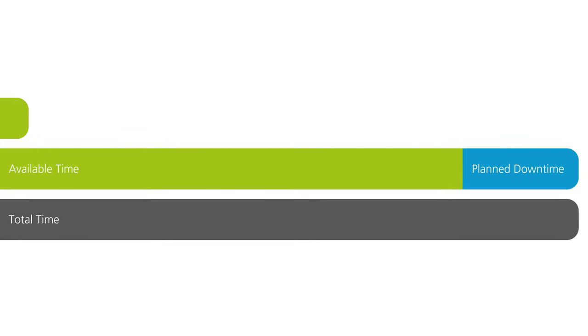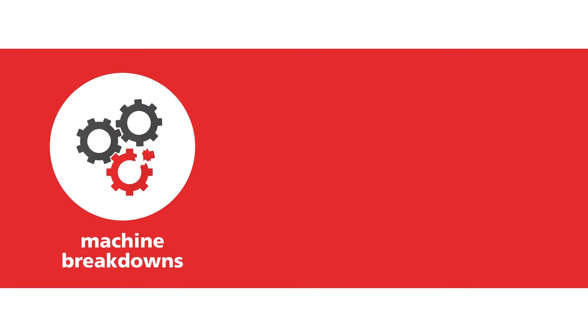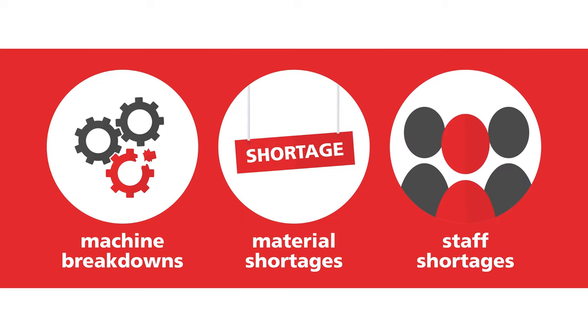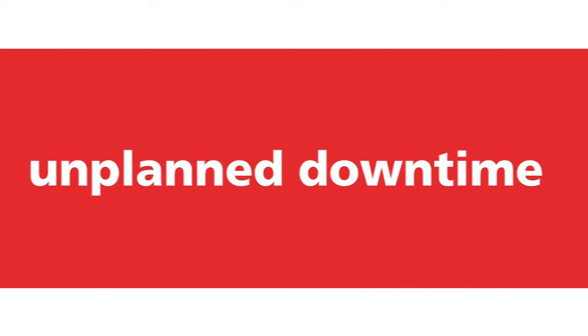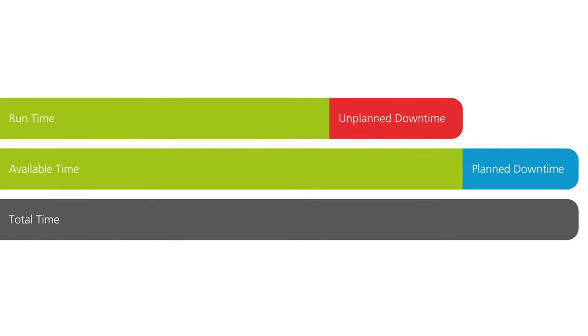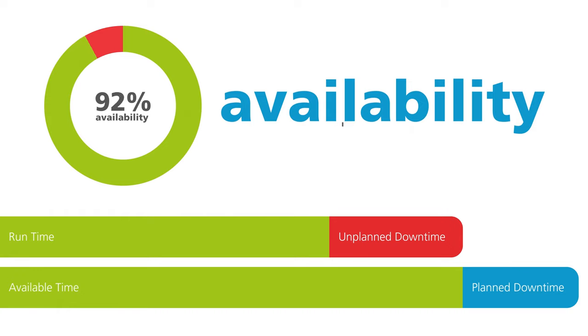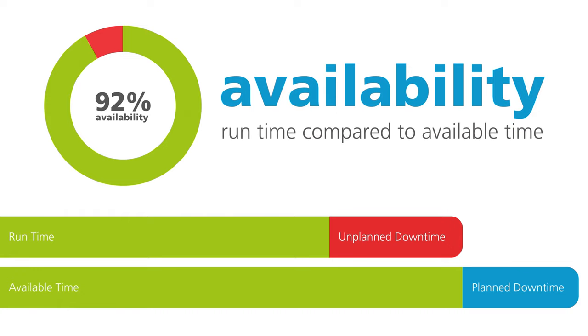On the next step up we work out how much time your machine was actually running for. Unexpected stoppages such as machine breakdowns, material shortages, or staff shortages add up to represent our unplanned downtime. In green you can now see the time remaining after unplanned downtime is taken into account, leaving us with our runtime — the time that the machine was actually running out of the time available. The ratio of runtime to available time is our availability score.